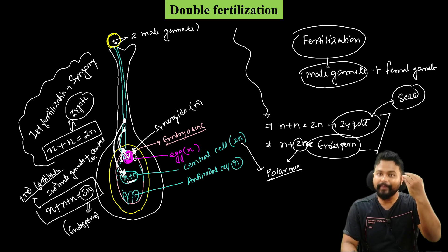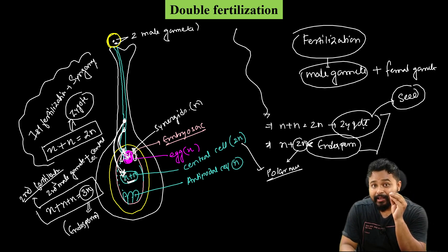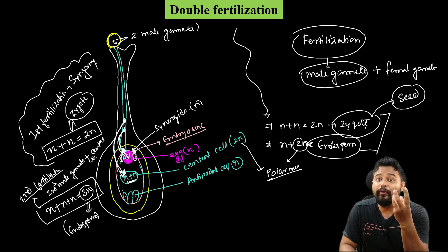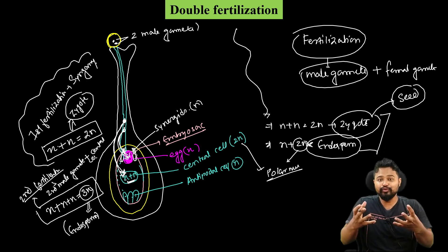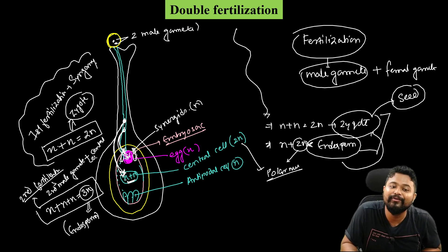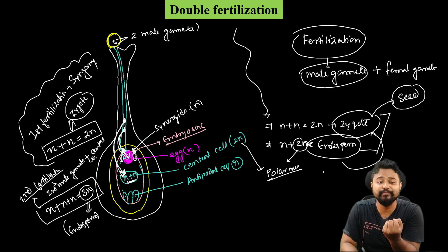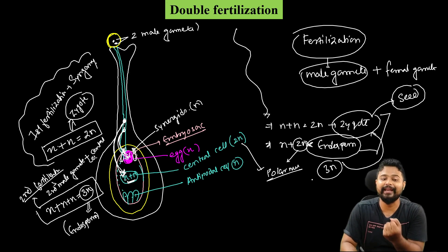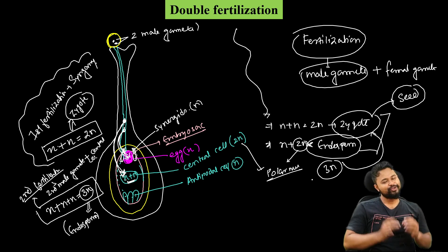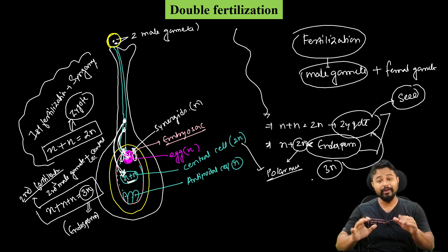So double fertilization produces the zygote and the endosperm. The zygote develops into the embryo and finally into the seed. The embryo needs nourishment from the endosperm, because the endosperm stores a lot of energy as it is 3N. So this is simply double fertilization.